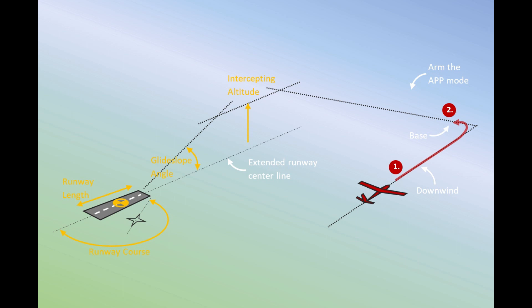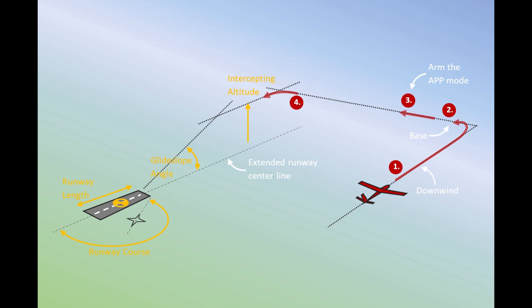At this point, typically the speed is also reduced in order to get a stabilized approach. While approaching the extended runway center line, the approach mode is armed with the APP button on the mode control panel. When crossing the runway center line, the autopilot automatically captures the ILS localizer and the approach mode changes from armed to activated.